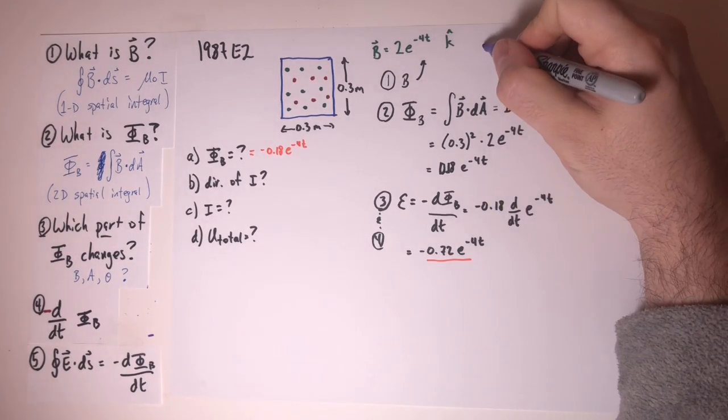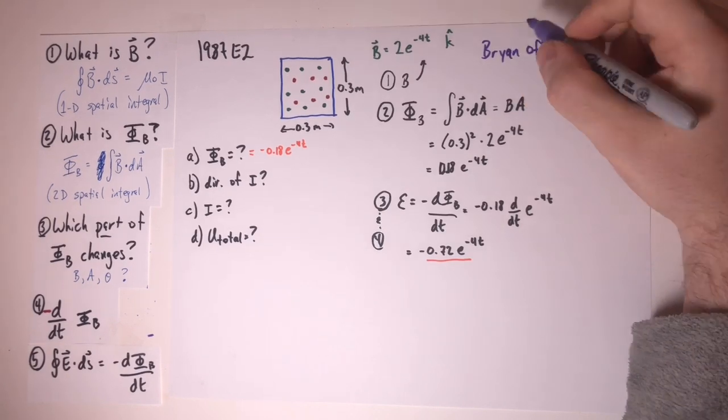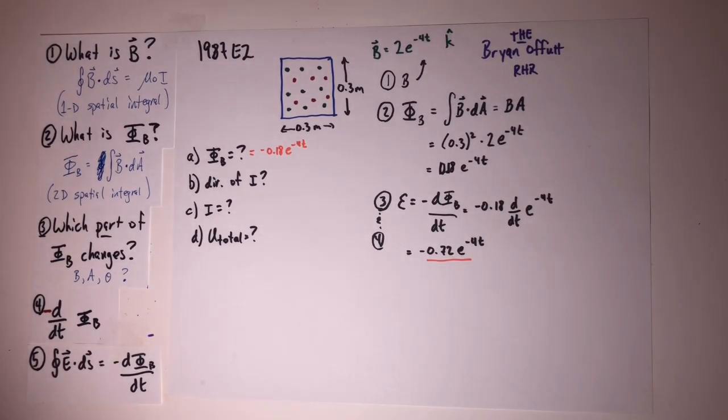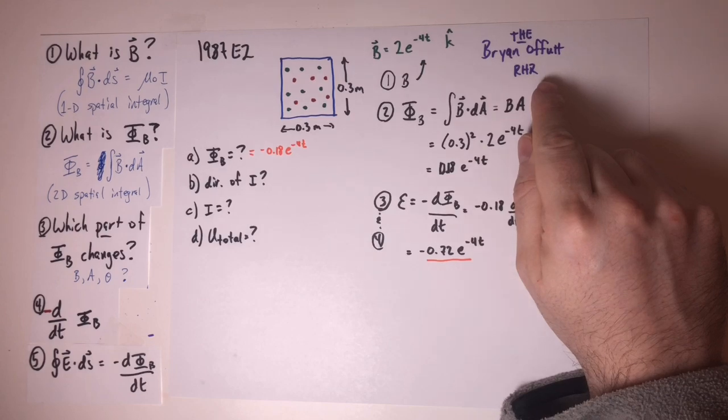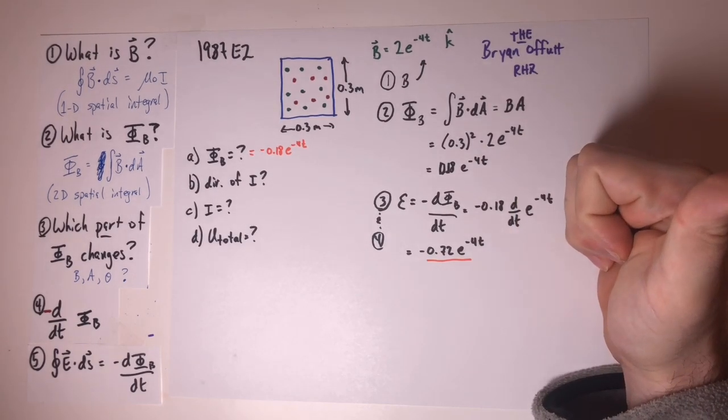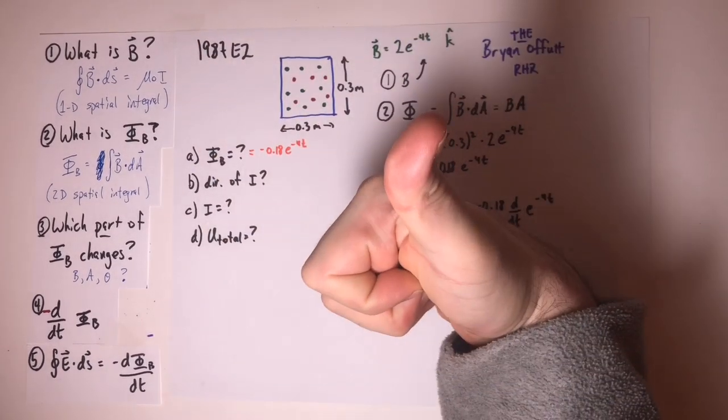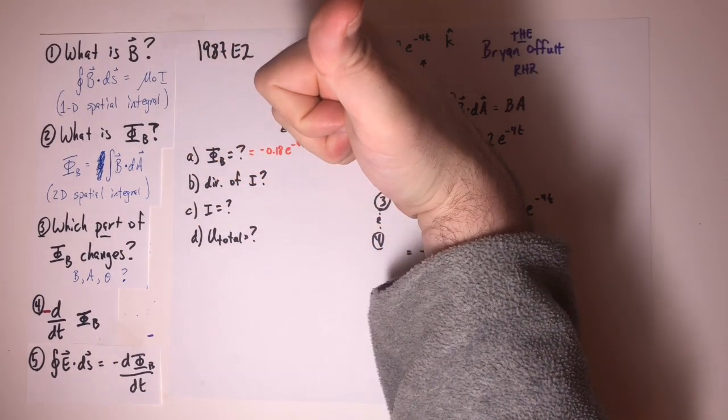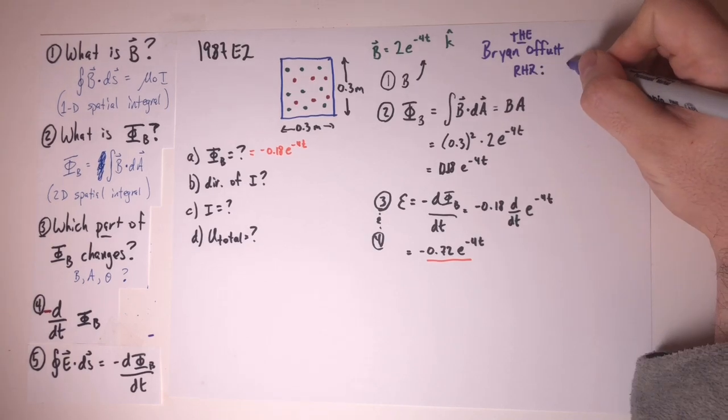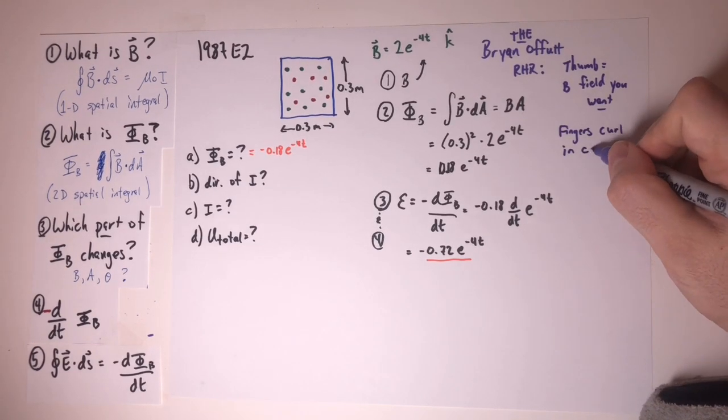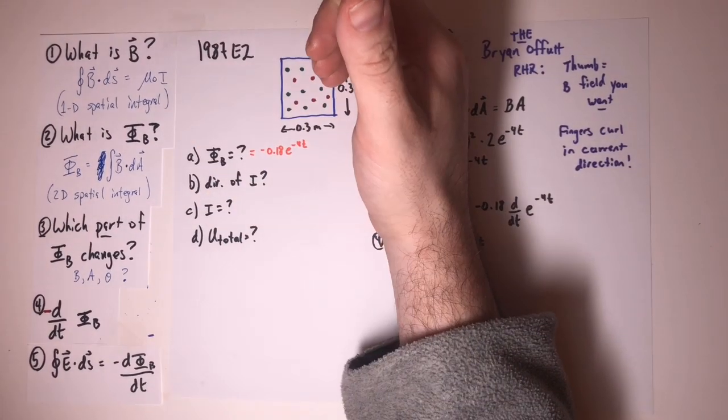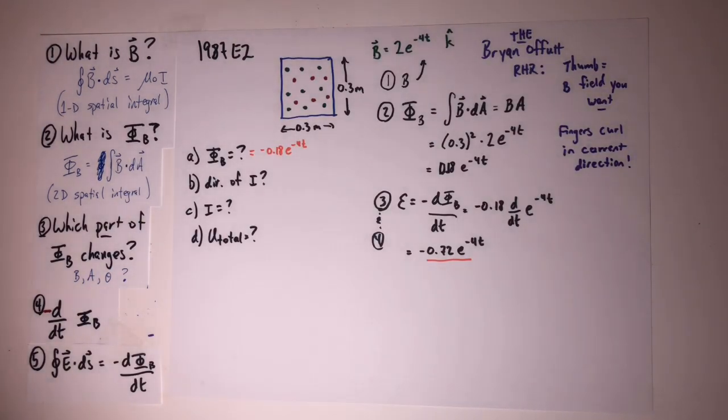Or you could apply what I've called the Brian Offit right-hand rule. Brian Offit was a student of mine who was a swimmer for Stanford a long time ago who figured out that he could use a different right-hand rule for these problems just about every time and it would always work. The way the Brian Offit right-hand rule works is the thumb of your right hand becomes the direction of the field lines that you want and your fingers curl in the direction that the loop should carry a current. Either way, you can see with a little bit of inspection that the current in the loop has to be counterclockwise.